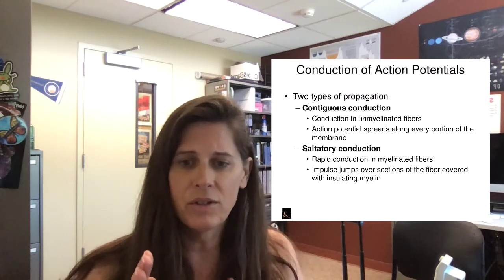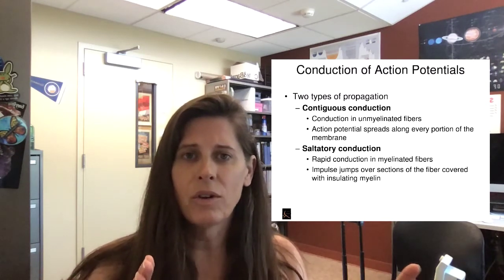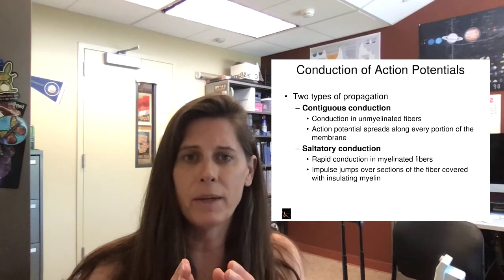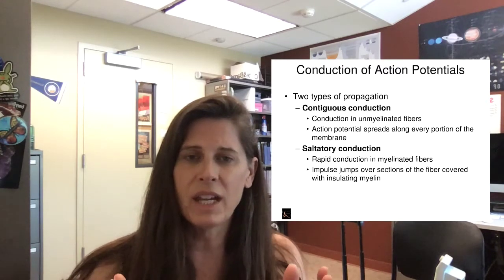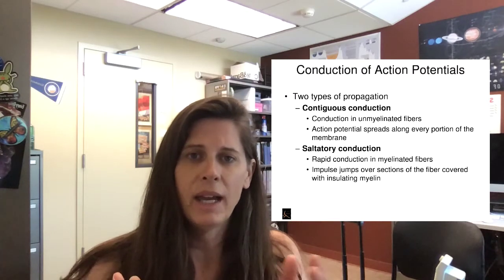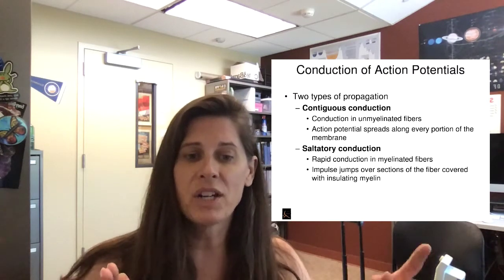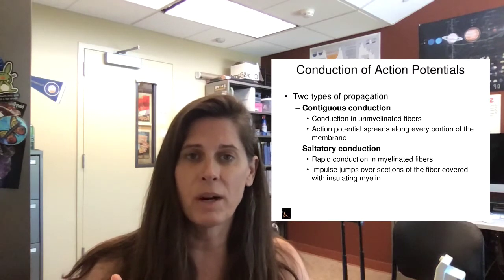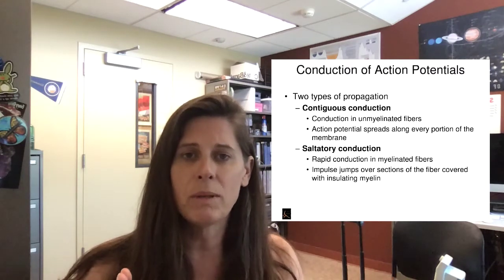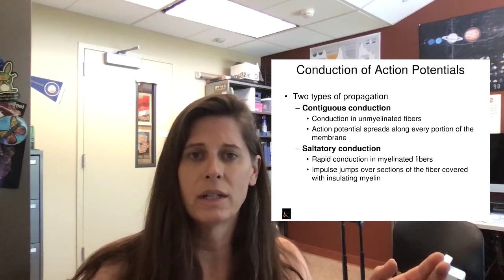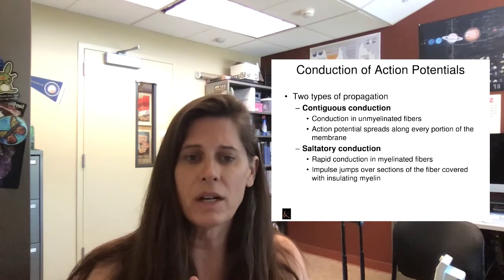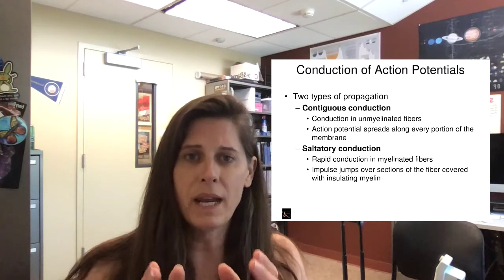To put simple numbers to it: if an action potential takes two milliseconds to run and there are 100 action potentials produced along the axon, that means it's going to take 200 milliseconds for the signal to travel that length.